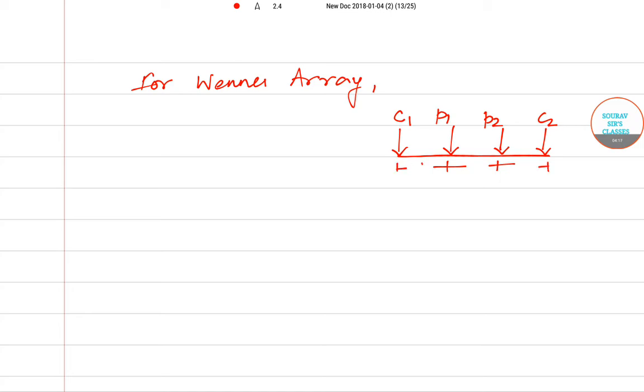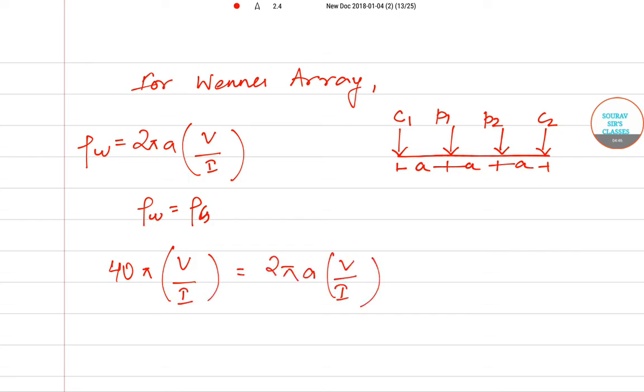So ρ_w = 2πa(V/I). This is the arrangement. As per the question, it was given ρ_w = ρ_s. So we have 40π(V/I) = 2πa(V/I). From here we can calculate the value of 'a'. So 'a' becomes 20 meters.